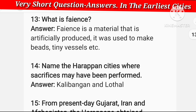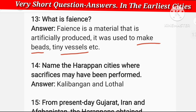What is faience? Faience is a material that is artificially produced. It was used to make beads — the kind used in garlands — and tiny vessels.